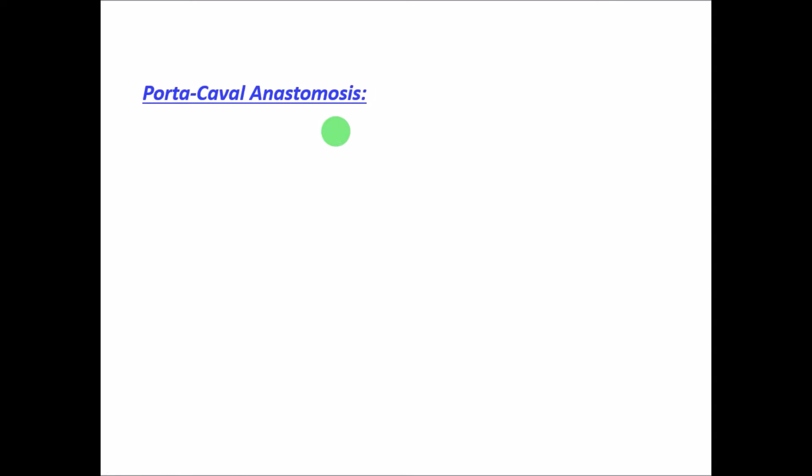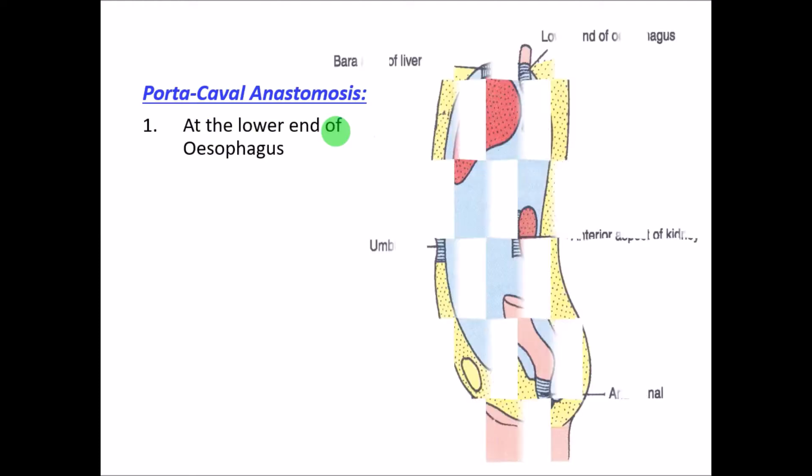Coming to the porto-caval anastomosis: these are the sites where the tributaries of the portal vein anastomose with the tributaries of the systemic veins — the superior and inferior vena cava.